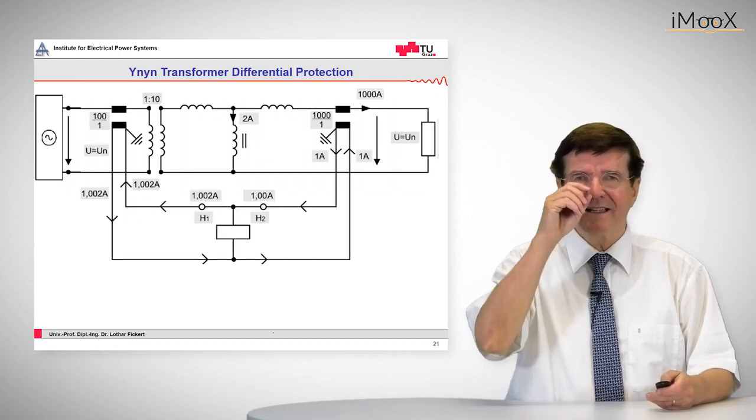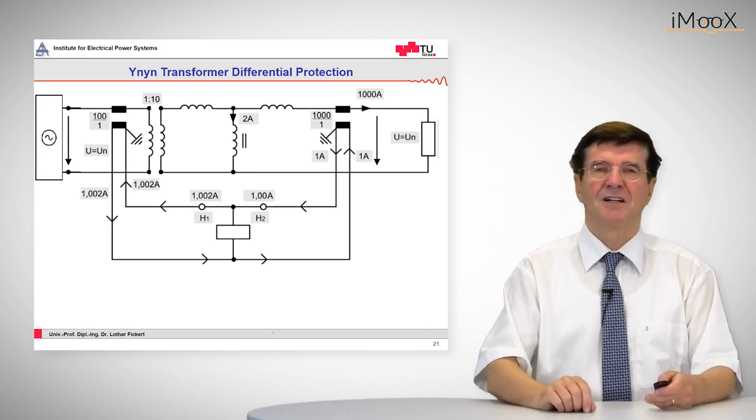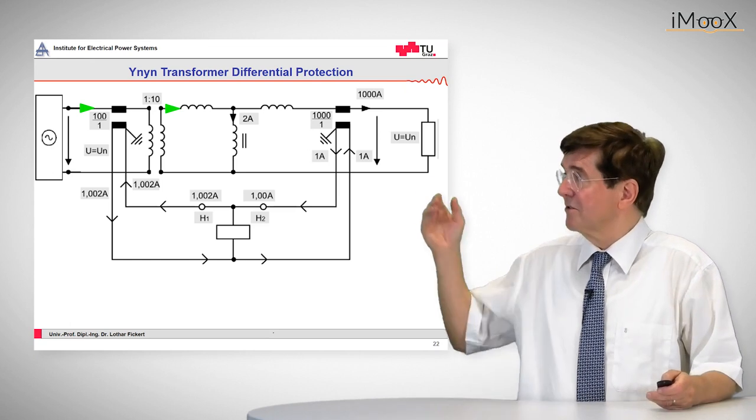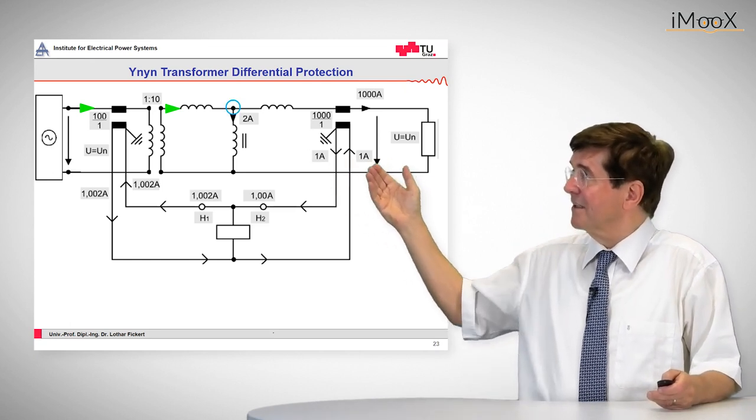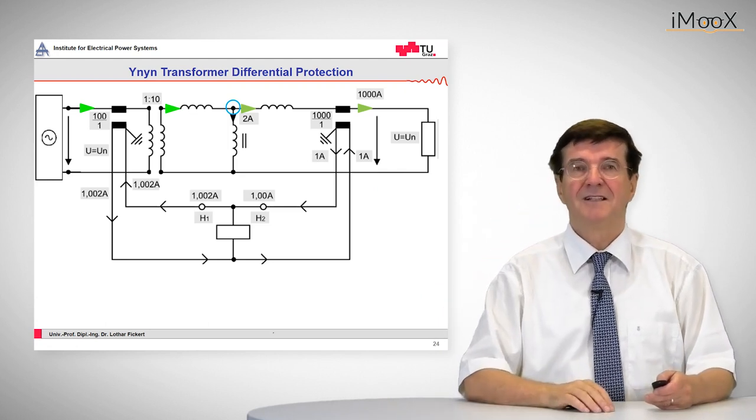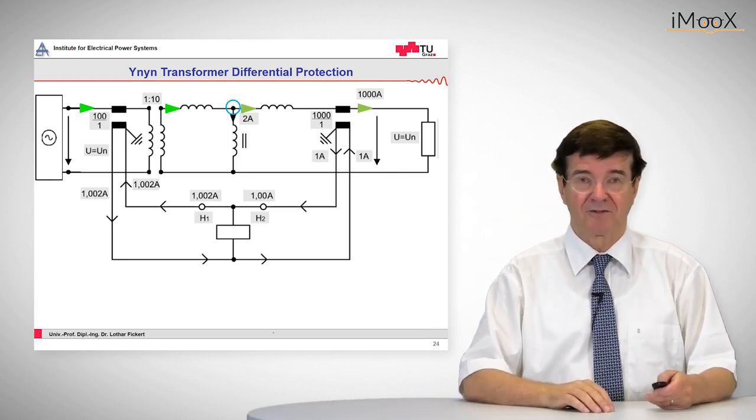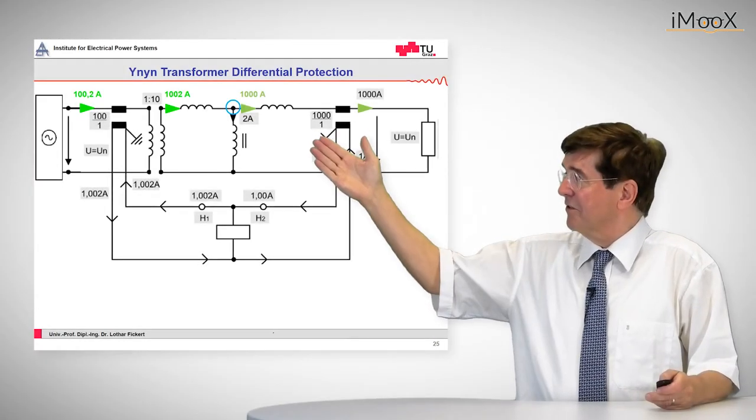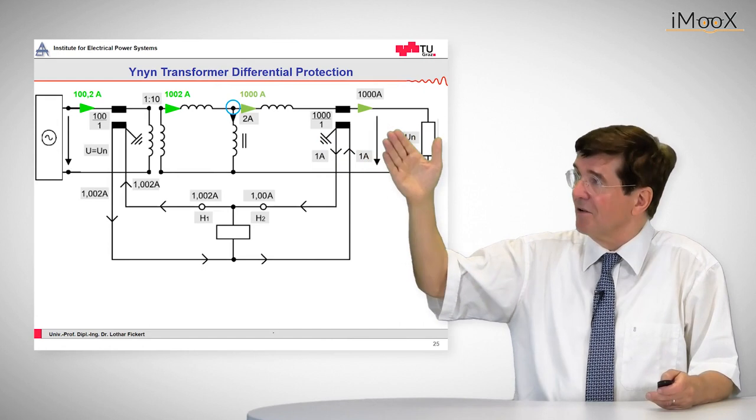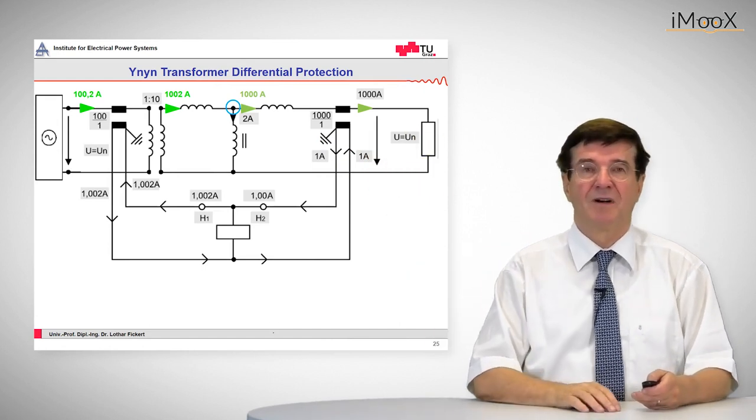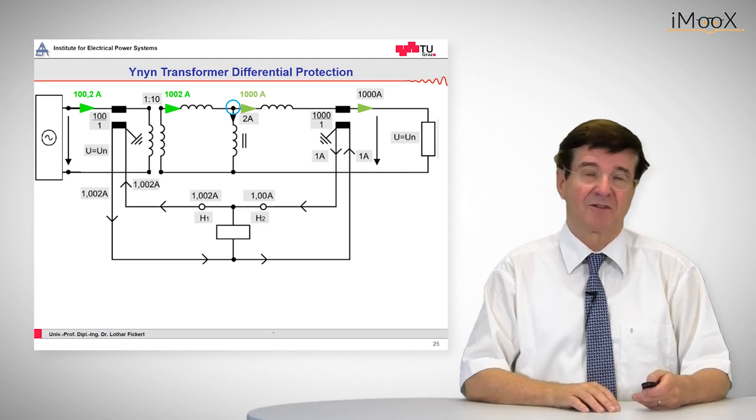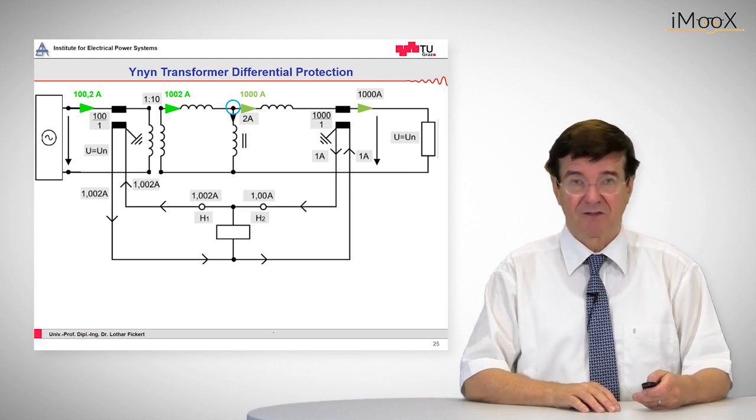For example, look in the details if we have a current flowing through a transformer. So we have a current that goes into the transformer and comes out after a little bit of the current has been deducted in order to magnetize the iron core. So if we have a current of 1000 amps leaving this transformer, then going back we need a current of 1000.2 amps on the primary side to go into this object.